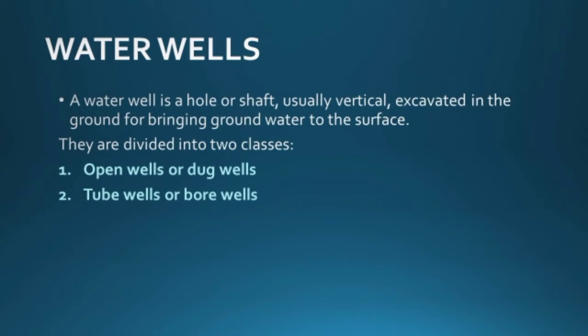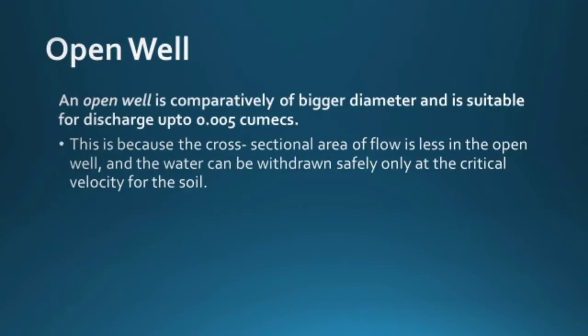In urban areas, you insert a narrower diameter tube or pipe into the formations to get groundwater. Bore well is a common name for tube well — it is just a pipe extending into the permeable area underground. An open well is comparatively of bigger diameter and is suitable for discharge up to 0.005 cumec.